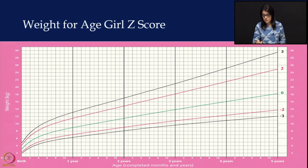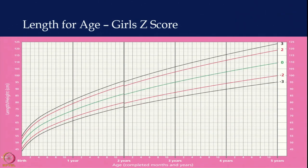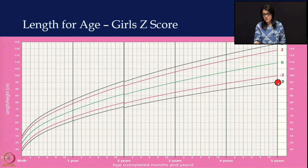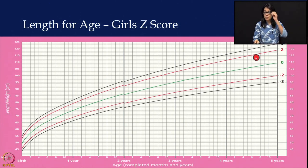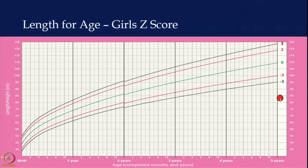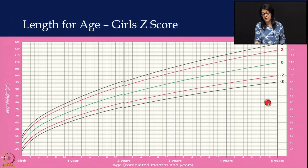We want to bring children up to the mean and above, using mother's milk, the earlier the better. This is the length-for-age chart — again a standard deviation growth chart with five lines. Children should fall between plus 2 and minus 2. Moderately stunted children fall between minus 2 and minus 3. In India, about 36 percent of children fall below minus 2 standard deviation instead of the expected 2 percent. Below minus 3 is severe stunting.